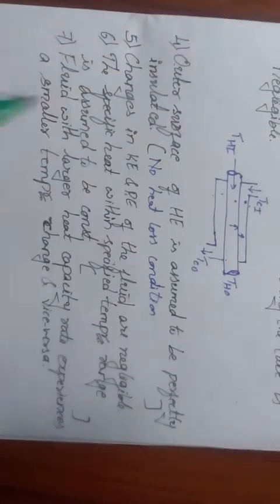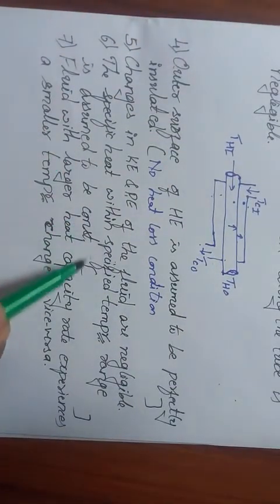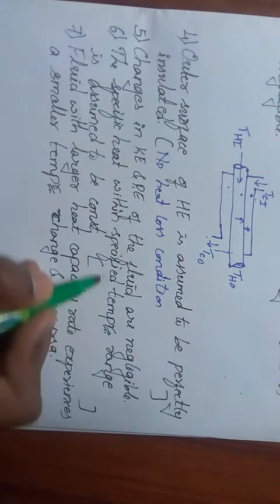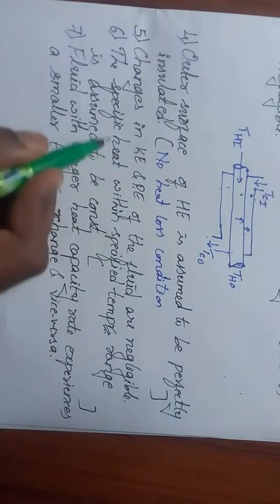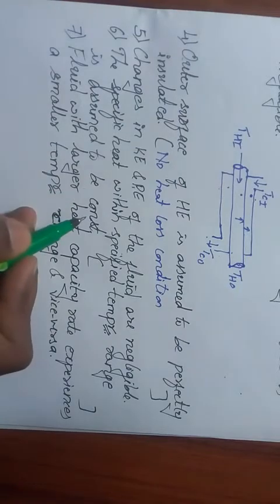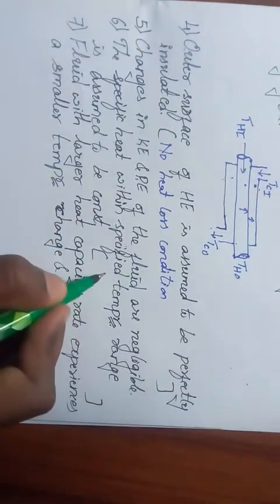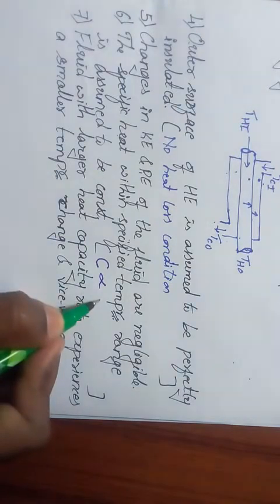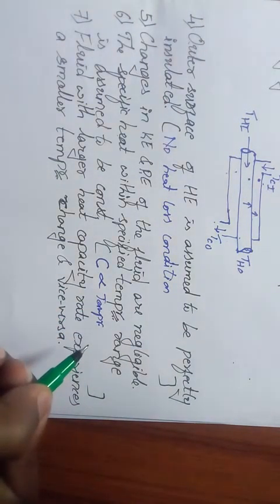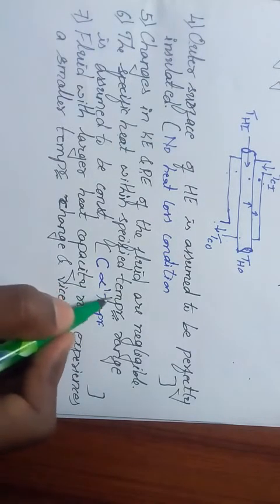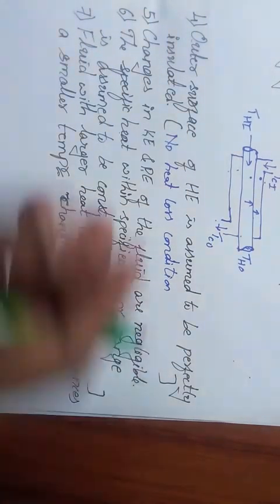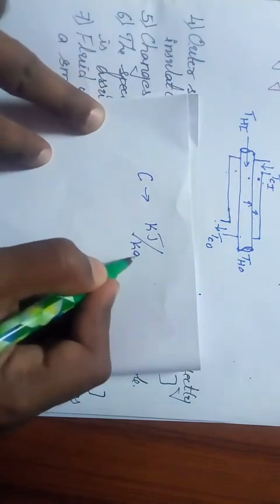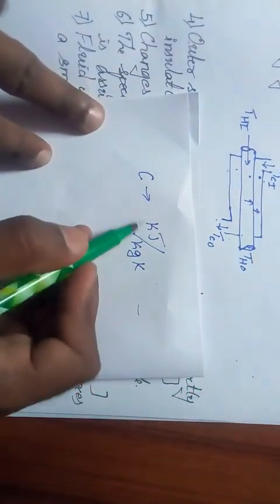Coming to the sixth point: the specific heat within specified temperature range is assumed to be constant, which says that for a range of particular temperature, specific heat doesn't change its value - it is constant. Why do we mention this? In actual practice, this specific heat c may be cp or cv. It is dependent on the temperature and it is proportional to one over temperature, because the specific heat c has a unit of kilojoule per kg Kelvin.